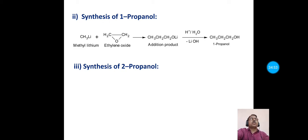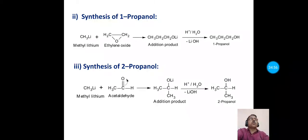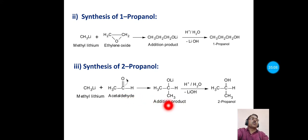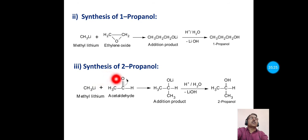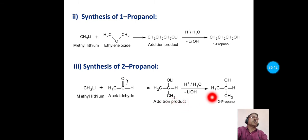The third synthetic application is synthesis of 2-propanol. To prepare 2-propanol from methyl lithium, it is treated with acetaldehyde, giving an unstable intermediate product, which upon treatment with dilute acid undergoes hydrolysis to give 2-propanol (isopropyl alcohol), a secondary alcohol. Lithium attaches to the carbonyl oxygen and the CH₃ group attaches to the electron-deficient carbon, forming the intermediate, which on acid hydrolysis gives 2-propanol.